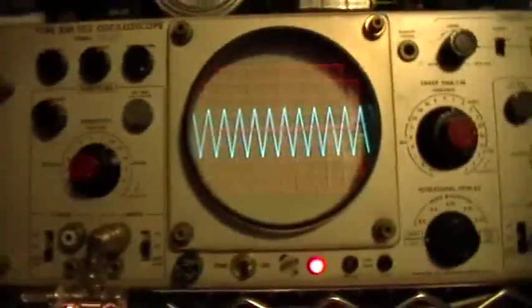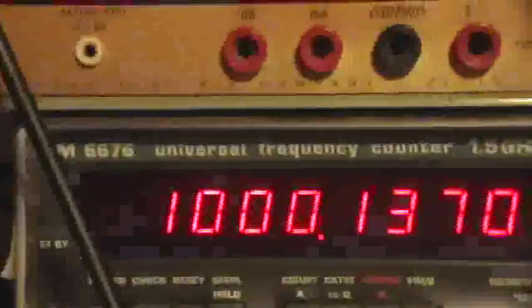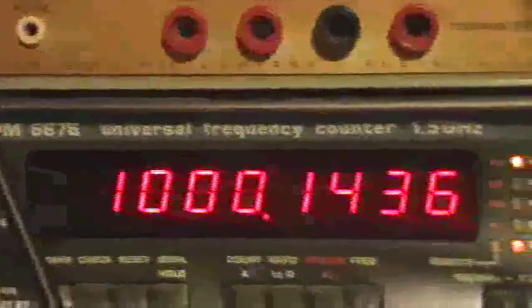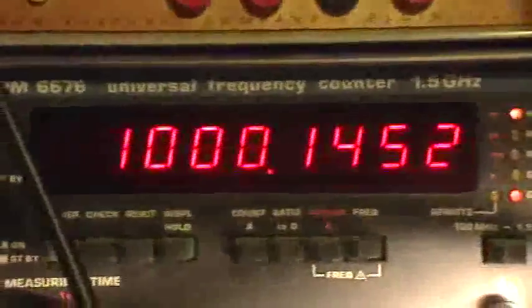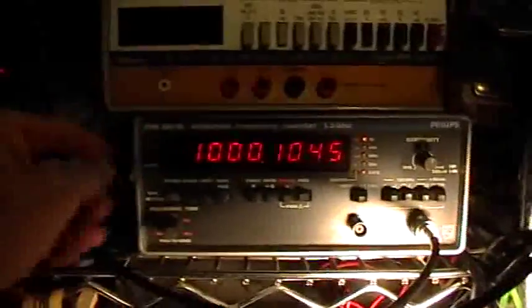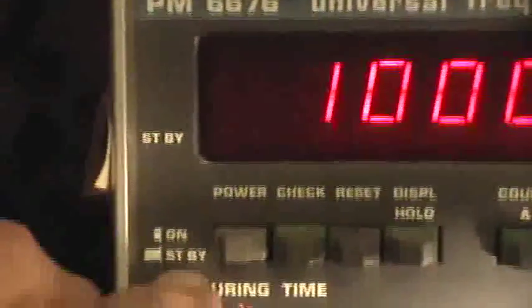So what I have here - I don't know if you can see that or not - this is a Philips PM 6676 universal frequency counter. Inside that Philips frequency counter there's a little crystal oscillator that is actually in an oven. So whenever the unit is plugged in, that oven is keeping that little crystal oscillating at the correct temperature so that it's stable.